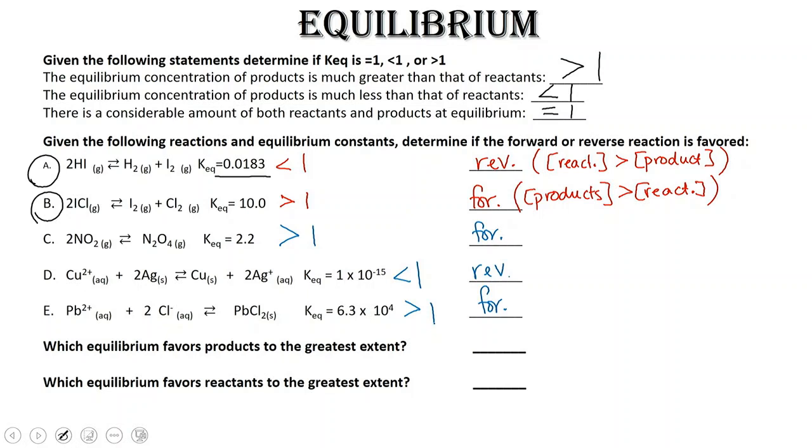Our last two problems ask which equilibrium favors the products or the reactants to the greatest extent. So let's take a look at the first one. Which one favors the products to the greatest extent? Well, we look at the value of our equilibrium expression. The larger the equilibrium expression value, the more likely the reaction is going to go forward and you will have more product.